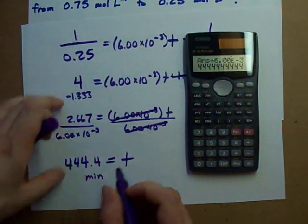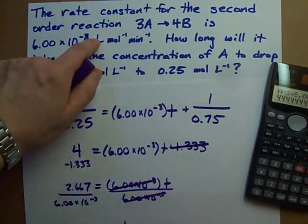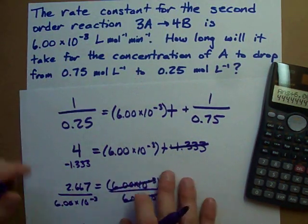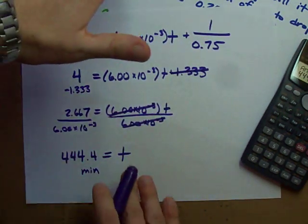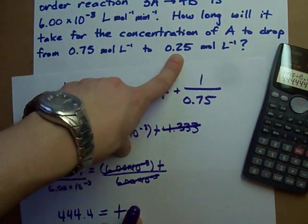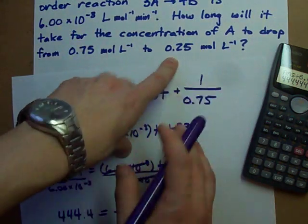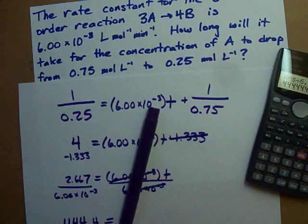The time it takes to go from this concentration to this concentration with this rate constant is 444 minutes. Seems like a long time, but you're cutting your concentration into thirds and it's a pretty slow reaction. So, makes sense. Best of luck!